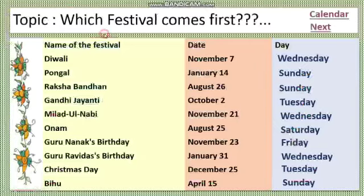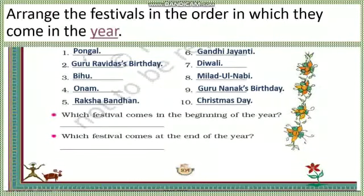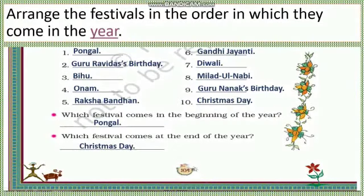After November, December 25th is Christmas, so Christmas comes last. Which festival comes at the beginning of the year? The answer is Pongal. And which festival comes at the end of the year? Christmas. I have explained textbook page number 104. Understood?